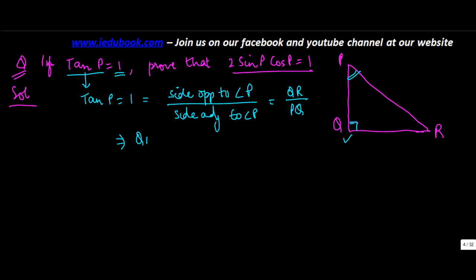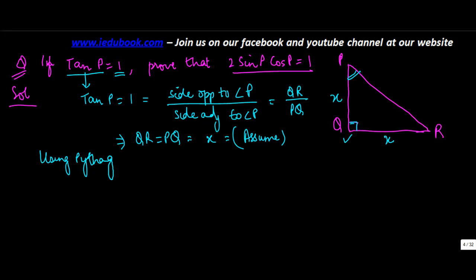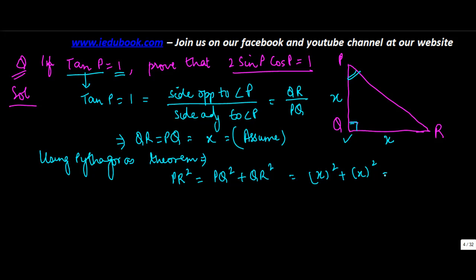This means QR is equal to PQ. Let's assume both are equal to X. Now using Pythagoras theorem, PR squared is equal to PQ squared plus QR squared, which is X squared plus X squared. So PR squared equals 2X squared, and therefore PR is equal to root 2 times X.